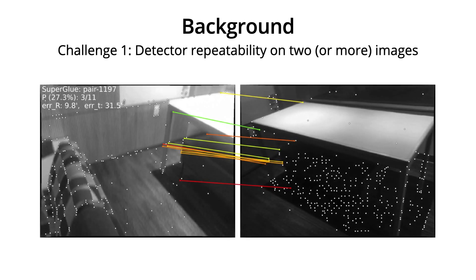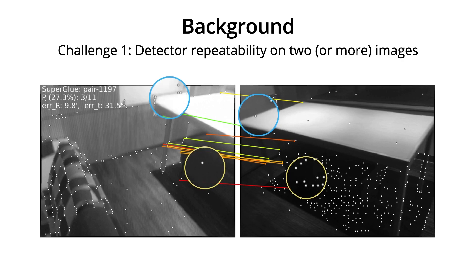This pipeline has two challenges. First, a feature detector may fail to extract enough interest points that are repeatable between images due to various factors such as low texture, repetitive patterns, viewpoint change, illumination variation, and motion blur. Like in this example, the interest points on the edge of the table and in the shadows are not repeatable.